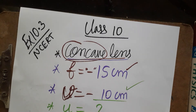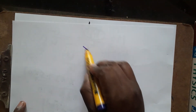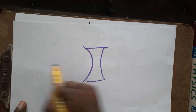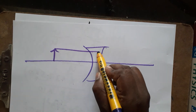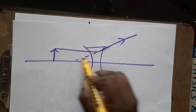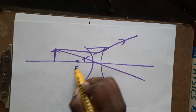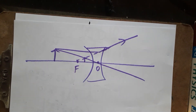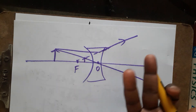First, we need to understand concave lenses. For a concave lens, parallel rays diverge away from the principal focus. The center ray goes straight through the optical center, and the image is formed on the same side as the object. From the diagram, we can easily see that the image is upright, virtual, and erect.